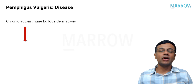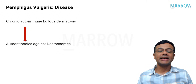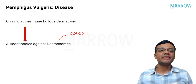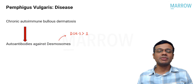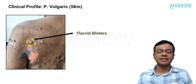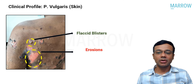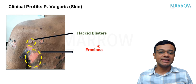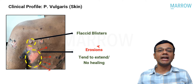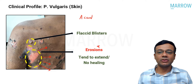Pemphigus vulgaris is a chronic autoimmune bullous disease that targets desmosomes. The two important antigens to remember are desmoglein 3 followed by desmoglein 1. Desmosomes are proteins which connect the keratinocytes together. Patients initially present with flaccid blisters that rupture leaving behind erosions. Because of acantholysis, these erosions tend to extend and do not heal — a key MCQ clue for pemphigus vulgaris. Acantholysis involves desmosomal rupture due to an autoimmune process.